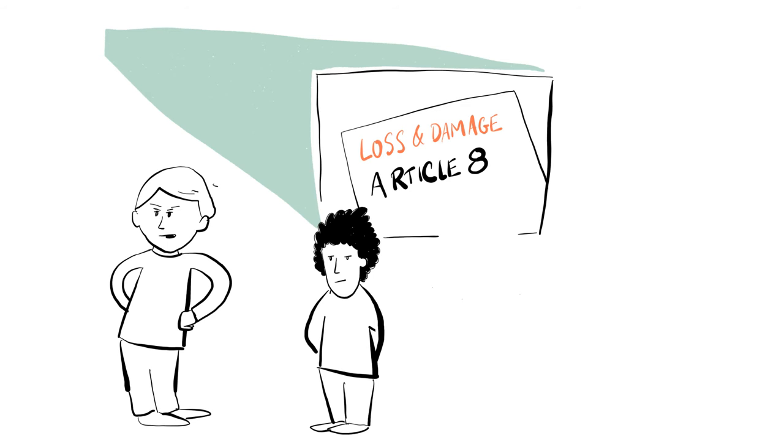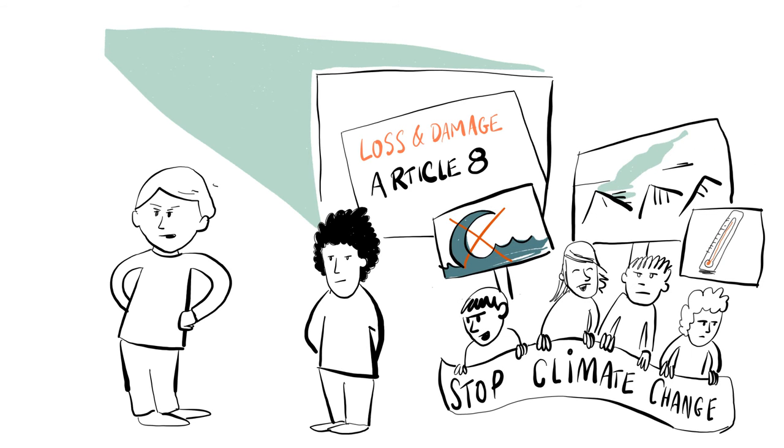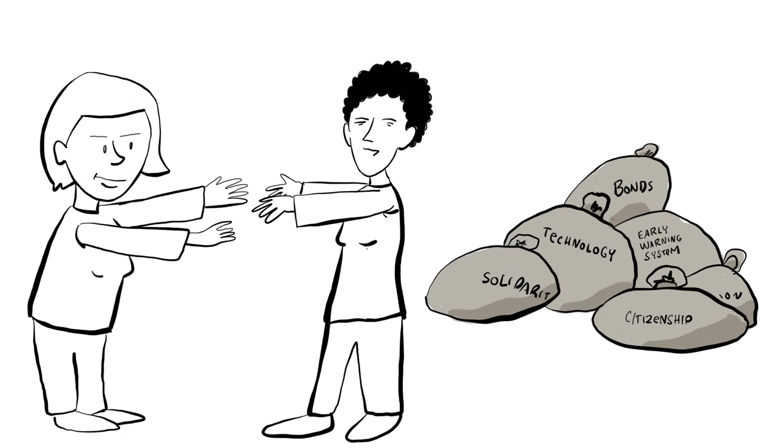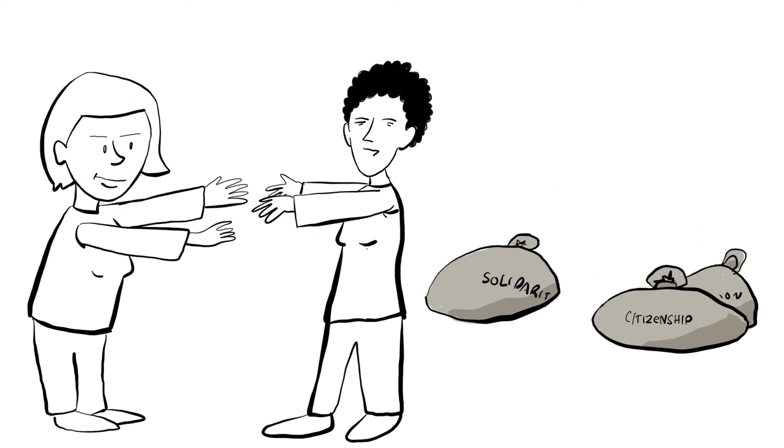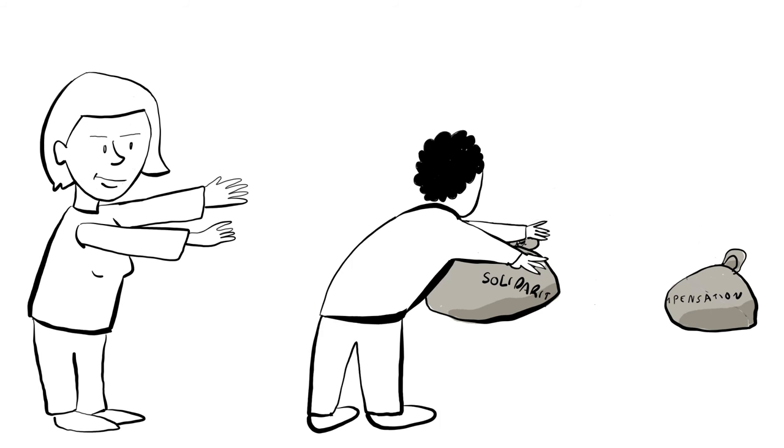It is the main polluters, however, who have to ensure that climate change is stopped and that the affected communities are supported efficiently with money, expertise, and technology. This has to happen comprehensively, immediately, and simply, without any complicated procedures.